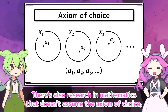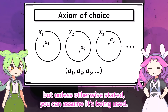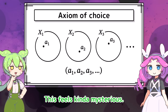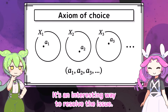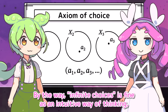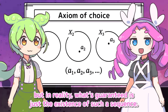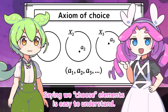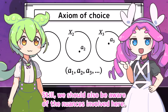There's also research in mathematics that doesn't assume the axiom of choice, but unless otherwise stated, you can assume it's being used. We don't know if we can make infinitely many choices, so let's assume we can. This feels kind of mysterious — it's an interesting way to resolve the issue. Infinite choices is fine as an intuitive way of thinking, but in reality, what's guaranteed is just the existence of such a sequence. Keep in mind that this sequence may not be describable by any specific rule. Saying we choose elements is easy to understand, but we should also be aware of the nuances involved.